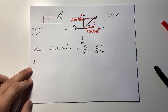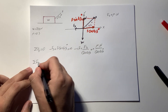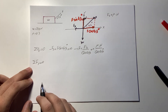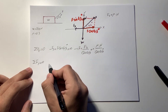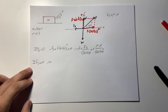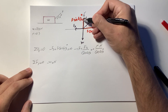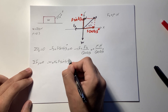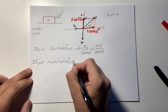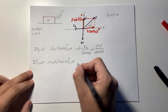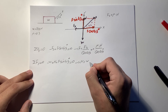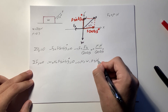Applying equilibrium in the y-direction: the sum of all forces equals zero. We have −W (weight downward), +N (normal force upward), and +F·sin(45°) (vertical component of the applied force). Setting this equal to zero and solving for N gives us N = W − F·sin(45°).